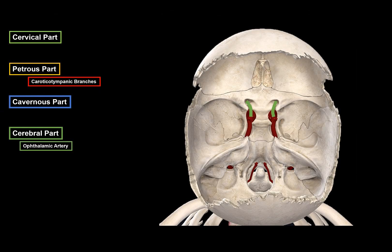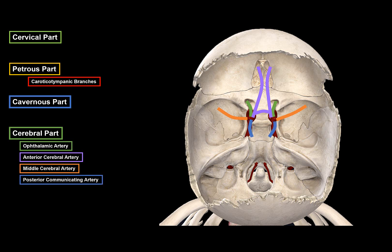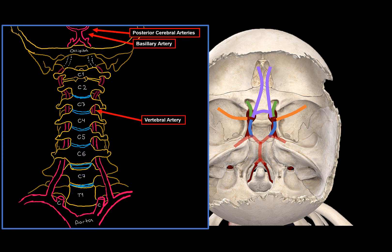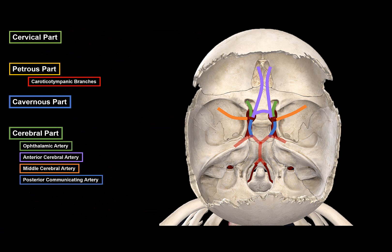Looking at a cranial view of the cranium, the ophthalmic artery goes into the optic cavity through the optic canal. Then there is the anterior cerebral artery, which communicates with the opposite side through the anterior communicating artery. There is the middle cerebral artery, then the posterior communicating artery, which communicates with the posterior cerebral artery. The posterior cerebral artery is a branch of the basilar artery, which comes from the vertebral artery from the subclavian artery. The last branch is the anterior choroid artery, which enters the lateral ventricle and forms the choroid plexus.